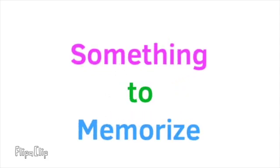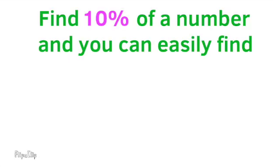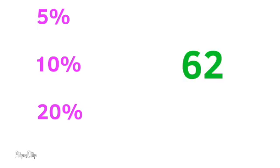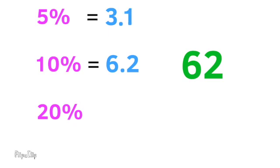Something to memorize: find 10% of a number, and you can easily find 5% and 20% of the same number. Let's use 62 as an example. 10% of 62 is 6.2. 5% is half of 10, so half of 6.2 — half of 6 is 3, don't forget the decimal, and half of 2 is 1 — so 5% of 62 is 3.1. 20% is double the size of 10%, so 6 times 2 is 12, don't forget the decimal, and 2 times 2 is 4. 20% of 62 is 12.4.